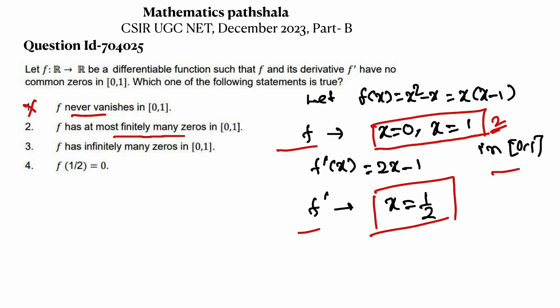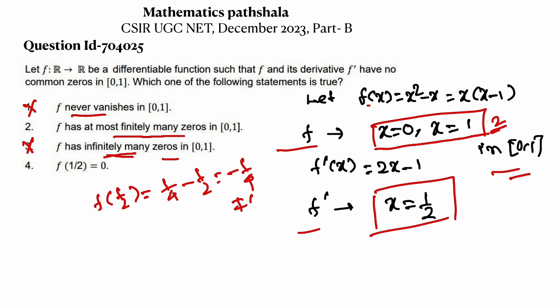But in general we cannot confirm option 2 from the example alone. Option 3 says f has infinitely many zeros in [0,1]. From our example, f has only two zeros, not infinitely many, so option 3 is false. Option 4 says f(1/2) = 0. Let's calculate: f(1/2) = (1/2)² - (1/2) = 1/4 - 1/2 = -1/4, which is not equal to 0. So option 4 is also false. Since this question is from Part B, option 2 should be true because all other options are false.